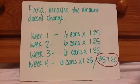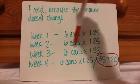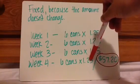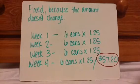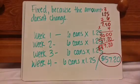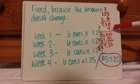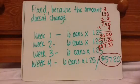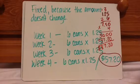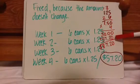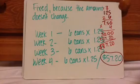So this is a two-step problem. Six times $1.25, four times, add those up, and then add the cost of the bag of cat food. $1.25 times six is $7.50 for one week. Since there are four weeks, I multiplied by four, so you get $30. Then you add the cost of the bag of cat food, and you get $87.20. That's your answer.